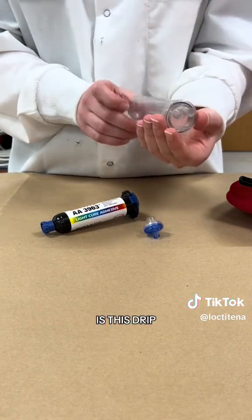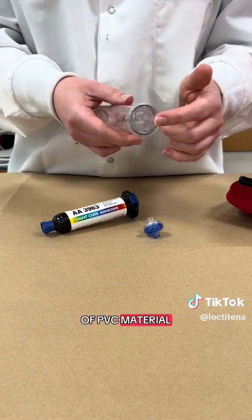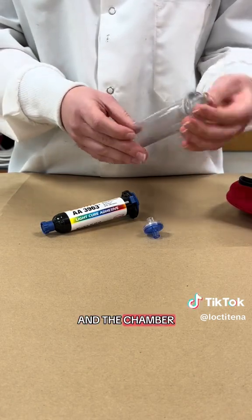The first one is this drip chamber and cover, which can be bonded together. It's usually made of PVC material, and the cover and the chamber would be bonded together.